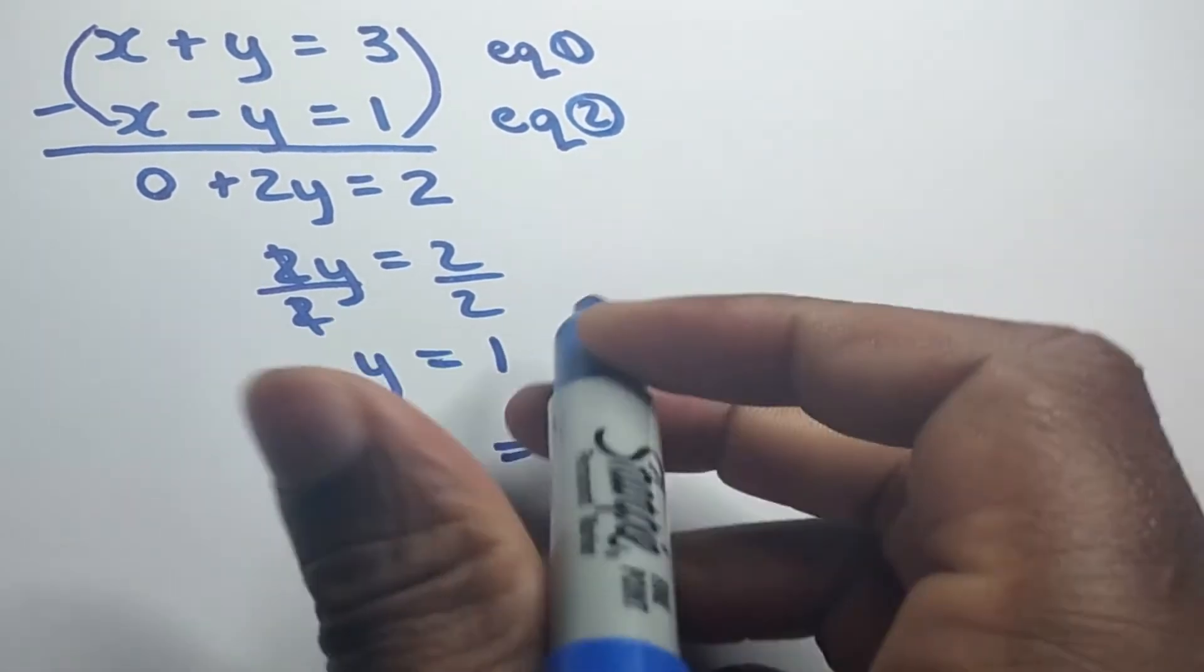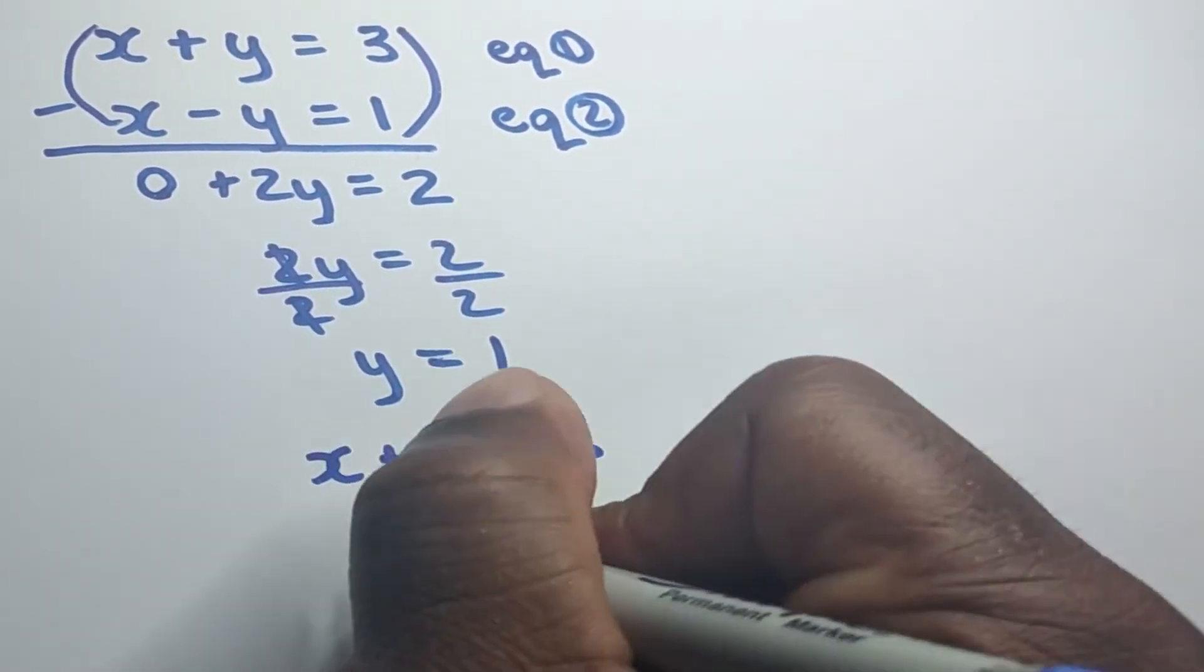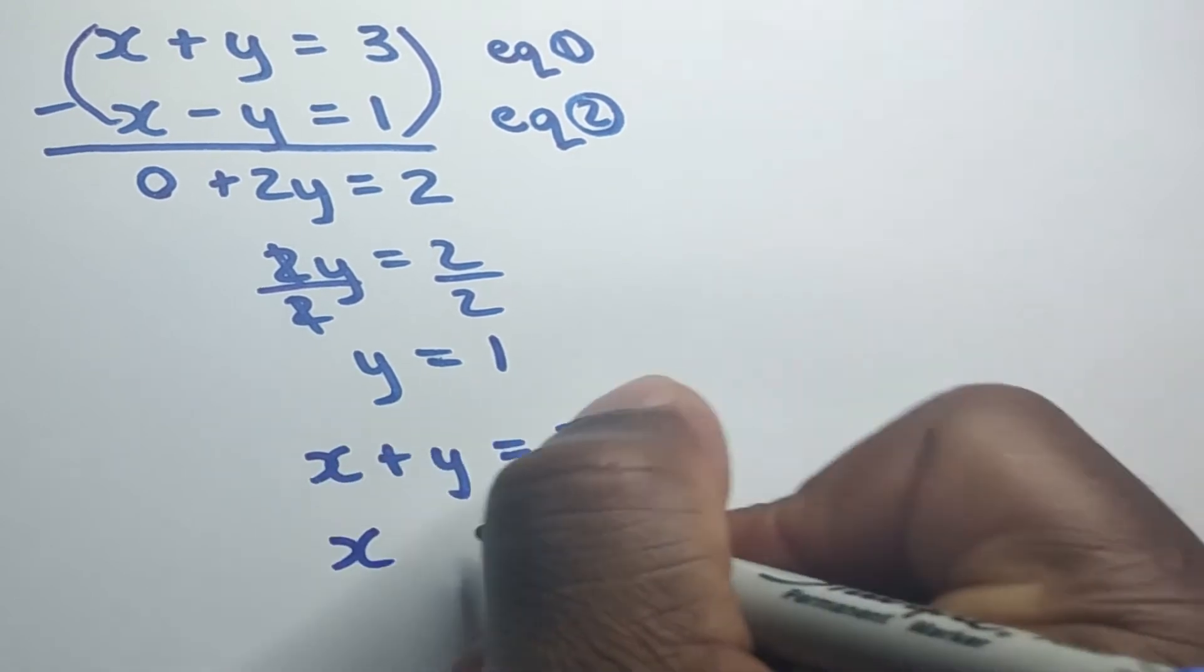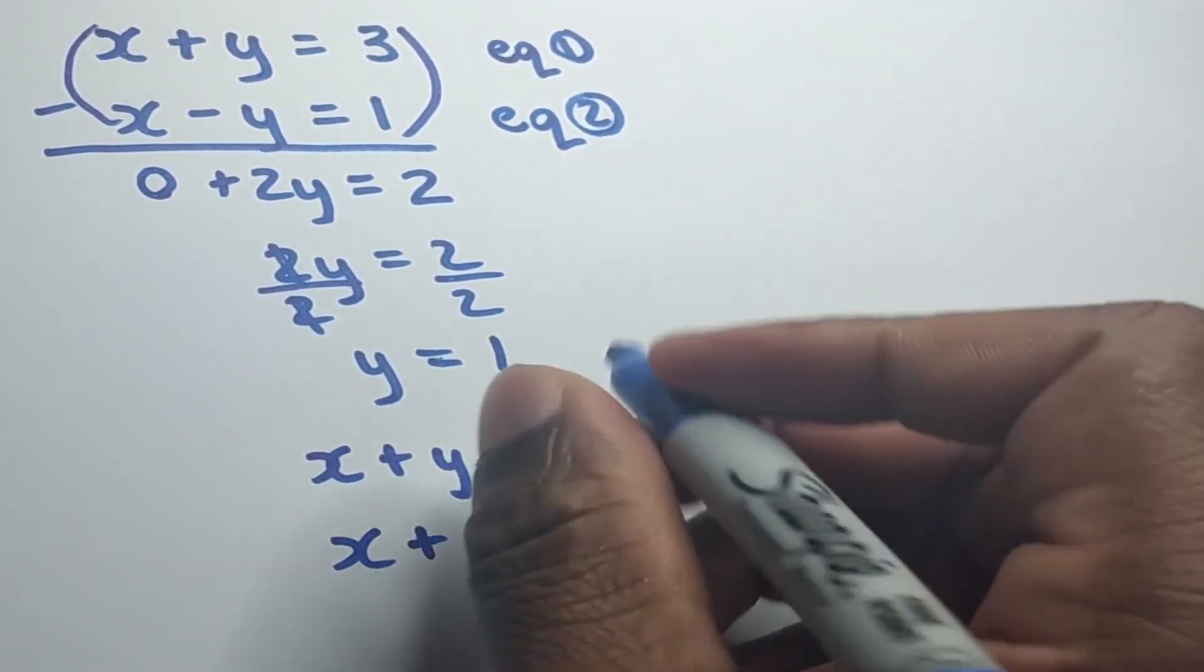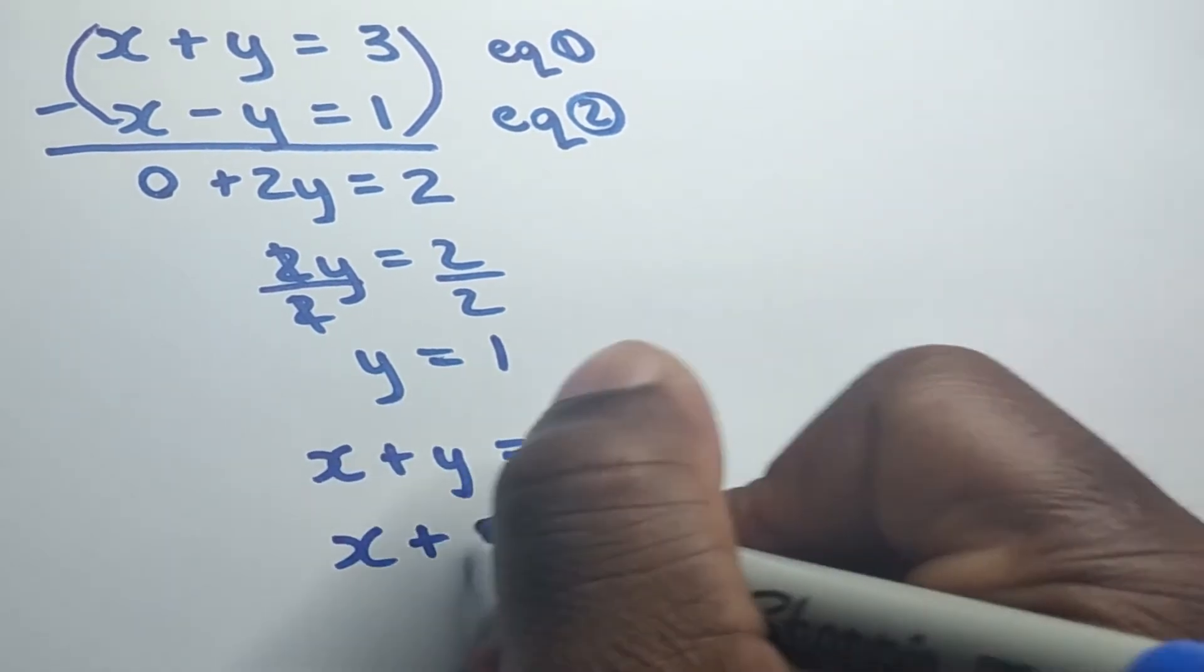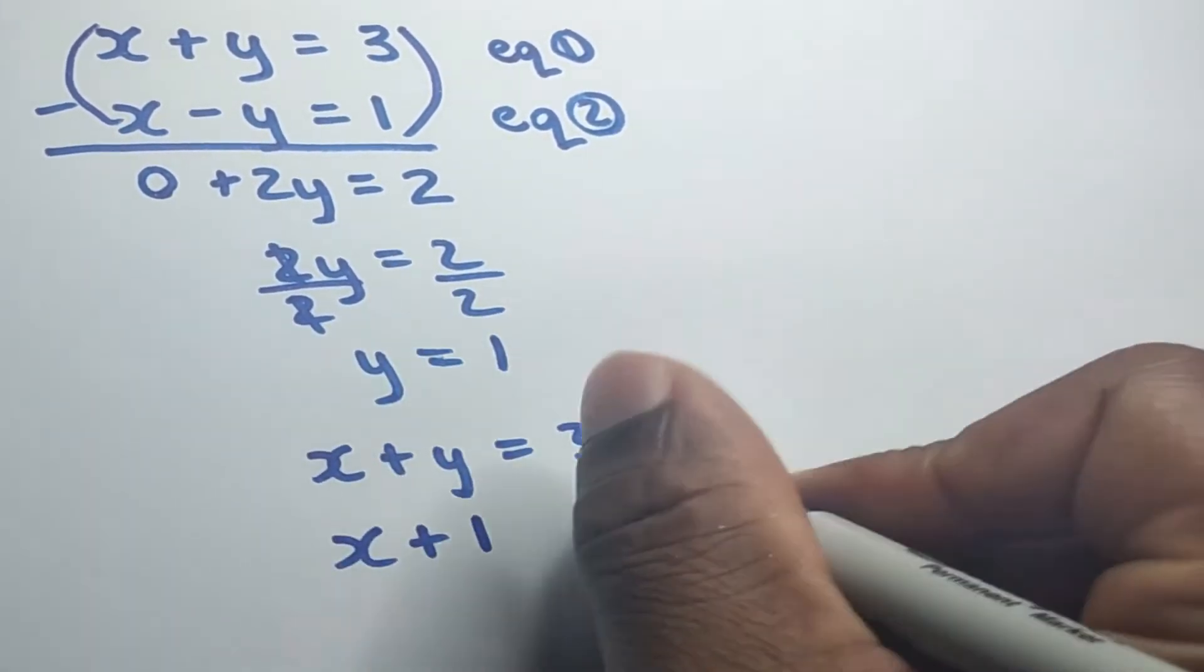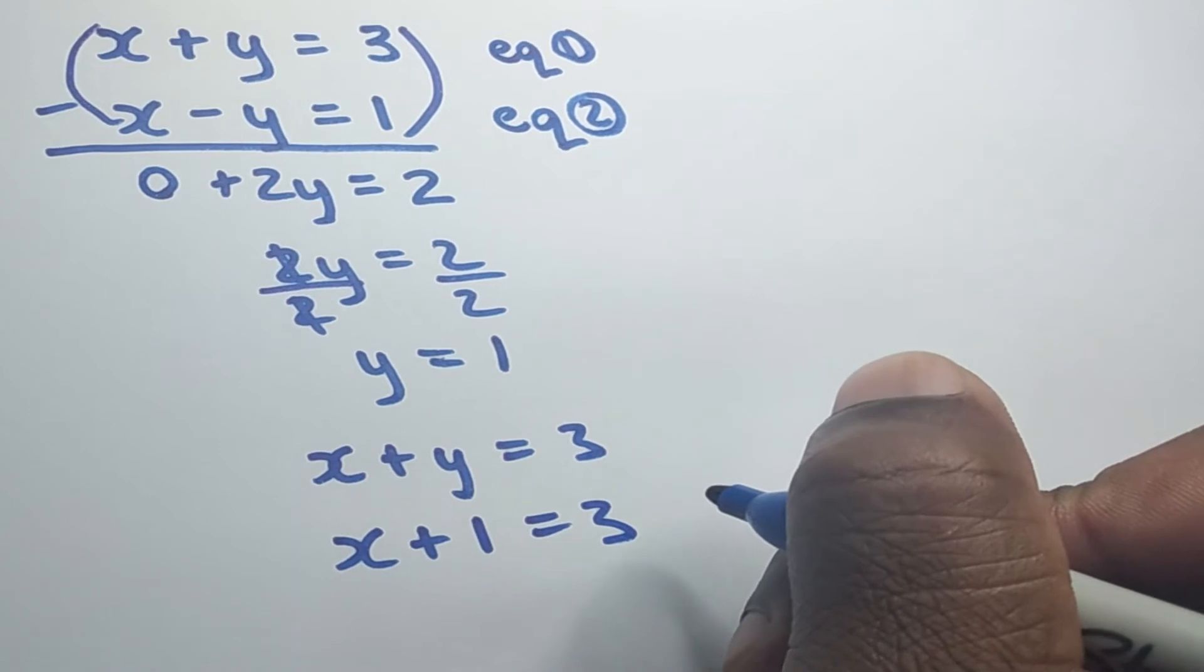So remember, we would have obtained y to be 1. So here we don't know x as yet, so we have x plus... I'm going to replace the y with 1. So remember, the value of y is 1. So I'm replacing y with 1 is equal to 3.